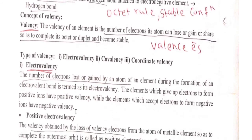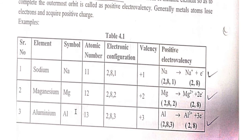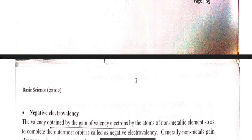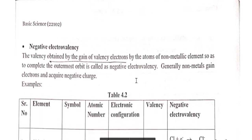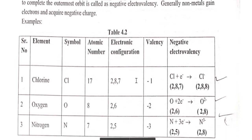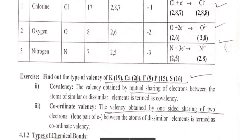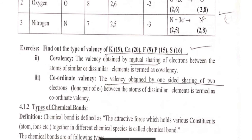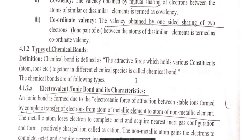Electrovalency is formed by loss or gain of electrons. Positive electrovalency means loss of electrons — examples are sodium (+1), magnesium (+2), and aluminium (+3). Negative valency is obtained by gain of electrons — examples are chlorine, oxygen, and nitrogen. Covalency involves mutual sharing of electrons. Coordinate valency is obtained by one-sided sharing of two electrons or a lone pair of electrons. The attractive force holding atoms or ions together is known as a chemical bond.